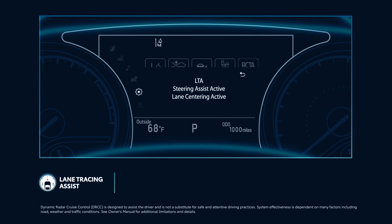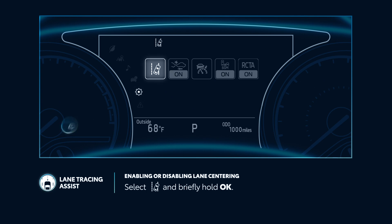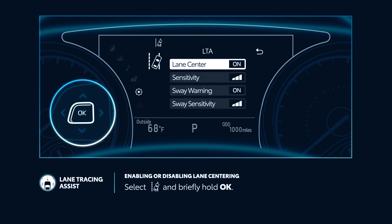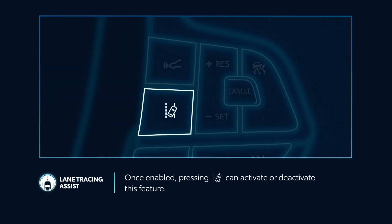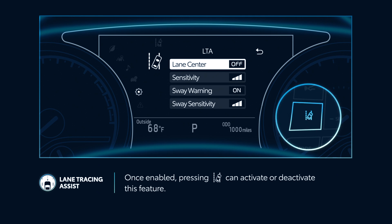When Dynamic Radar Cruise Control is active, the lane centering function will operate the steering wheel to maintain the vehicle's position within its lane. To enable or disable lane centering, select the Settings menu, then enter the LTA menu by selecting it and briefly holding the OK button. Now select Lane Center and press OK to toggle the setting. Please note that once enabled, a quick press of the LTA button on the steering wheel can activate or deactivate this feature.